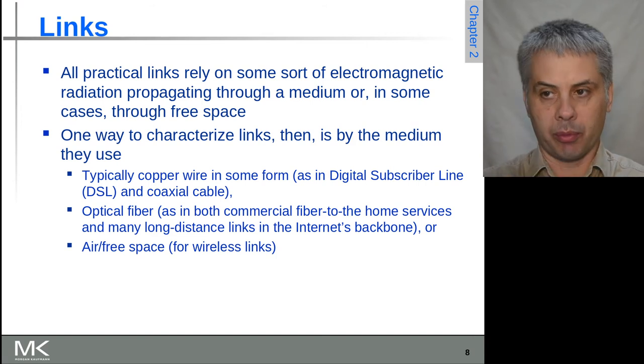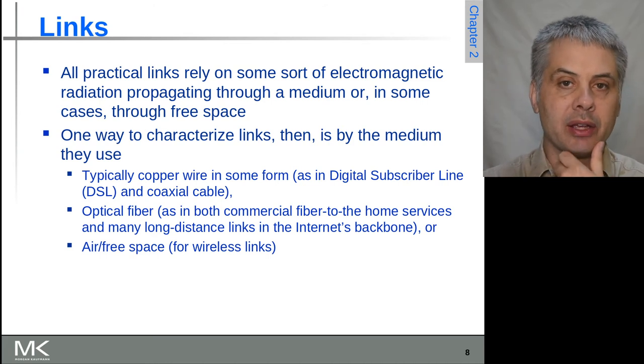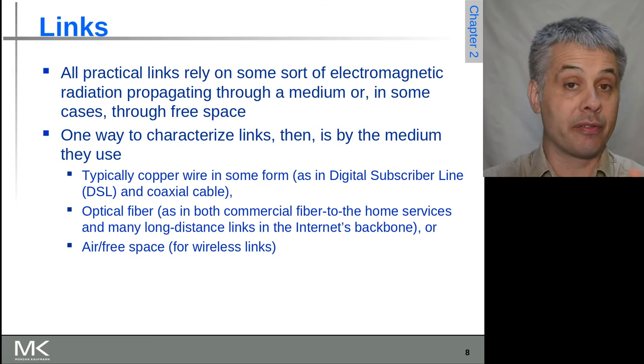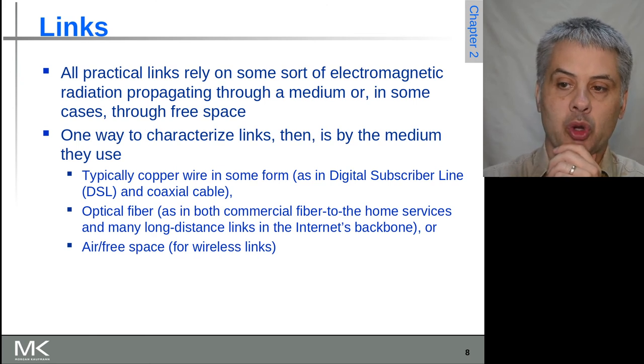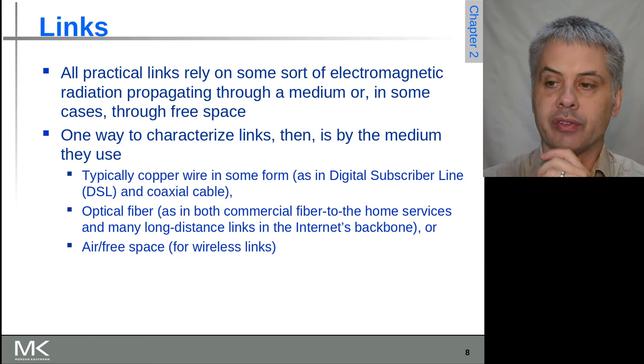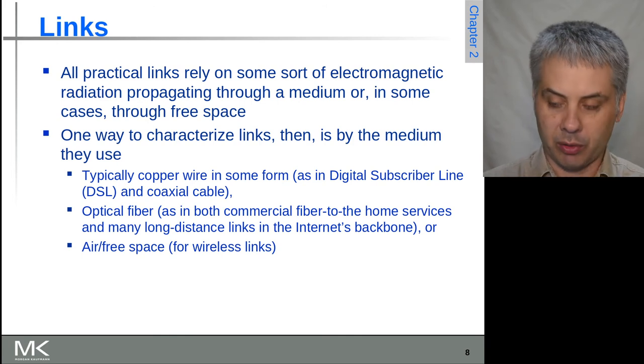Within computer networks we tend to talk about the different kinds of links. Broadly speaking there are those that go through free space (unguided media) versus those that use some kind of guided media—that might be a copper cable or a fiber optic cable. There is a variety of different ways that we can classify these different communications links.